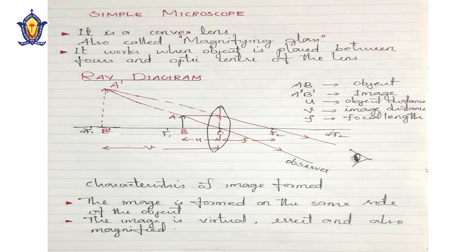As shown in the diagram, AB is the object placed between the focus and optic center, and A'B' is the image formed. The image formed is on the same side as the object, and is virtual, erect, and magnified. The observer sees a highly magnified image.